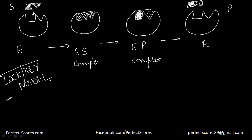This model is named for its specificity. Enzymes and substrates share specificity — a given enzyme will only interact with a small number of specific substrates that complement the active site. The interaction between enzyme and substrate is described as lock and key because a lock opens only in response to a specific key.